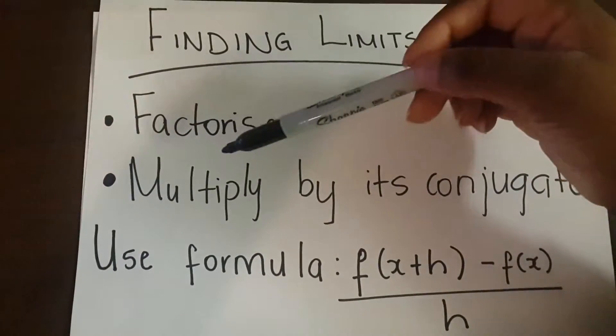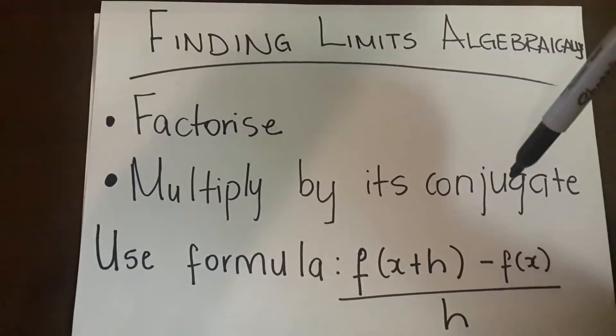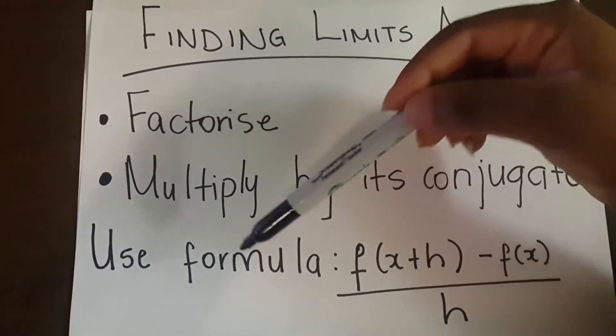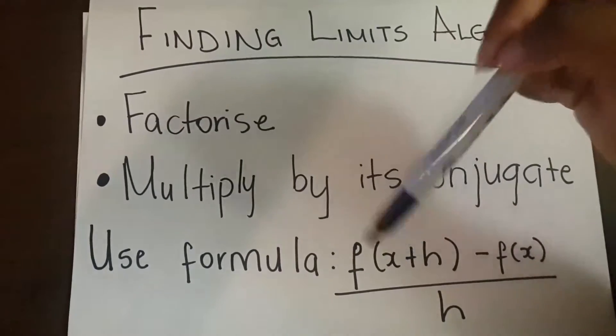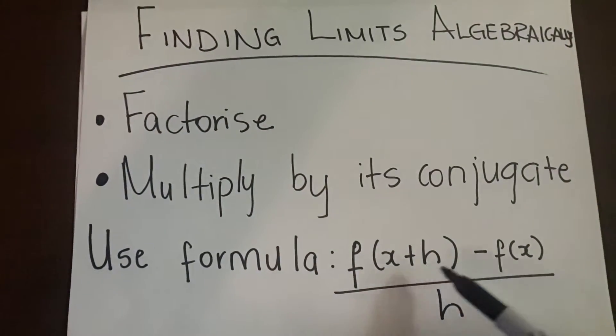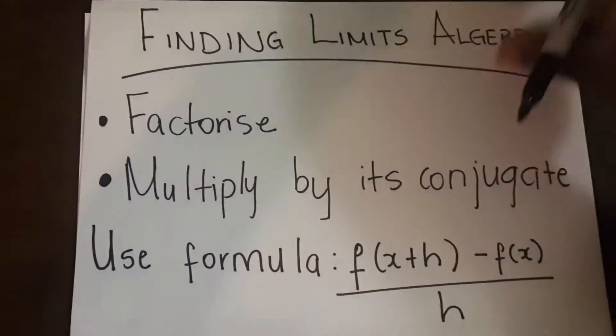You can either factorize or multiply the function that you're given by its conjugate. And then if all else fails, you use the formula which is f(x+h) - f(x) all over h.